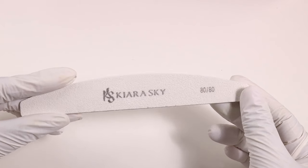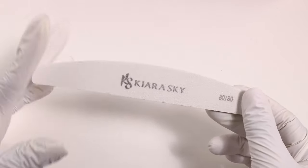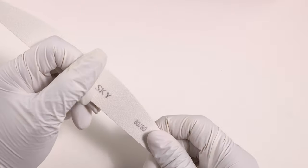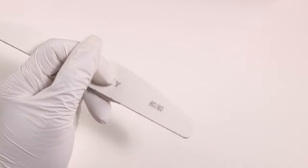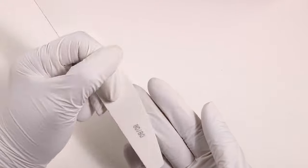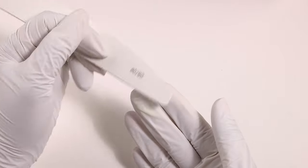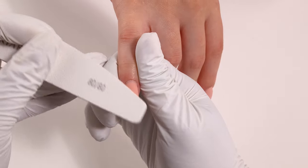Now that we have shaped the free edge and the sidewalls, we can go ahead and begin with our surface work. Just like we did with our nail prep, you want to place your nail file between your fingers and use your thumb to apply pressure and maintain control of the nail file as you're filing the surface of the nail.